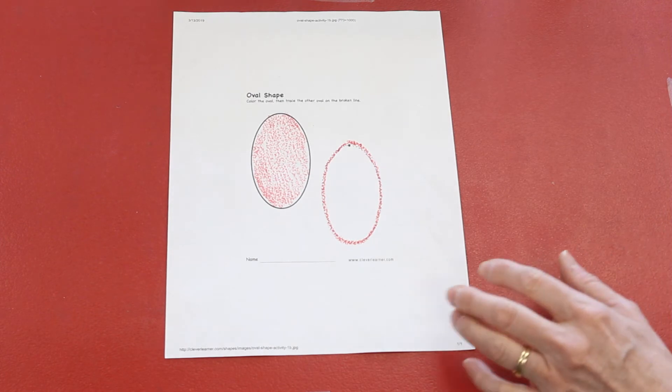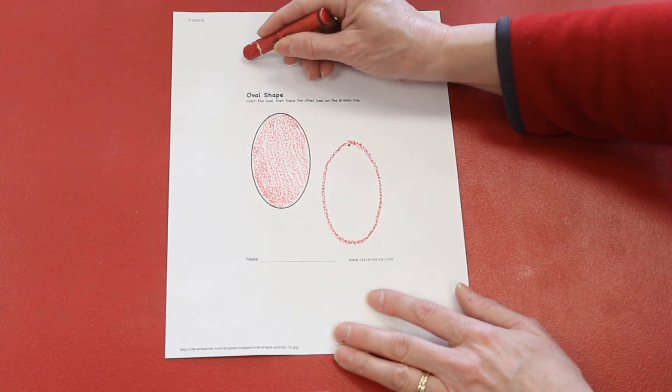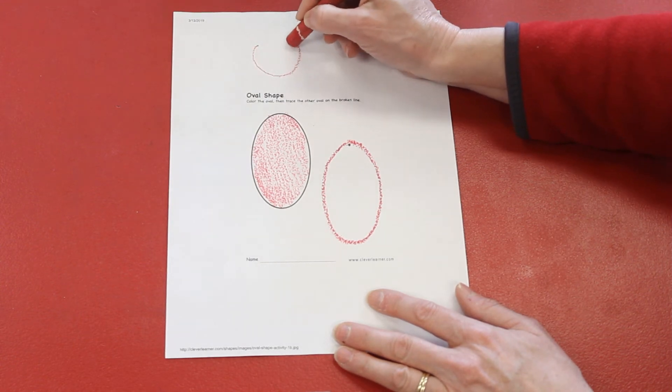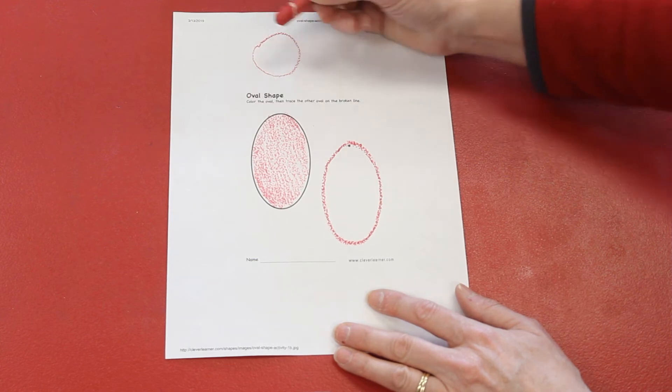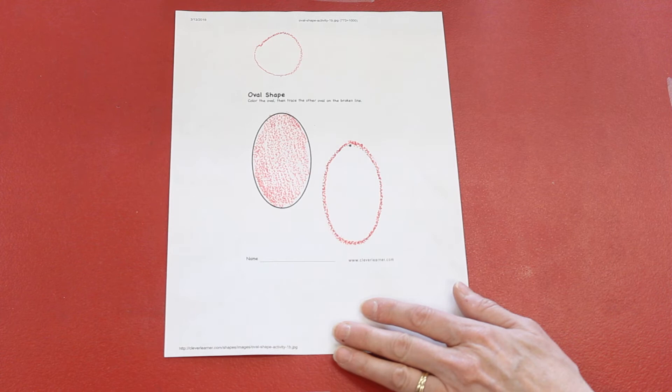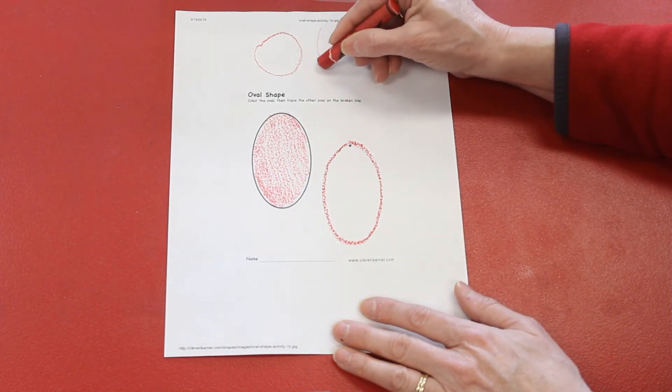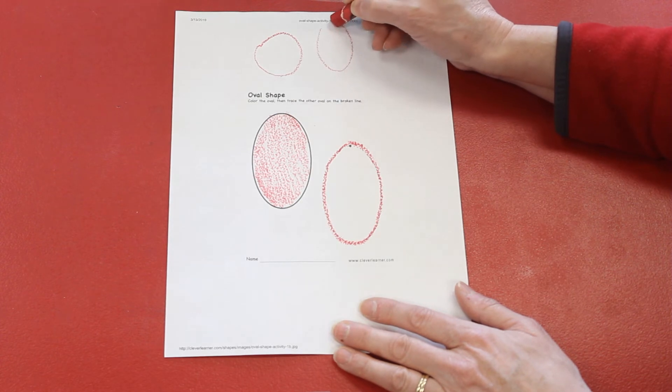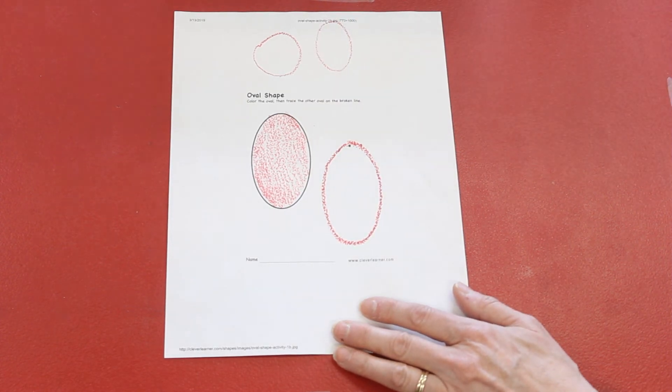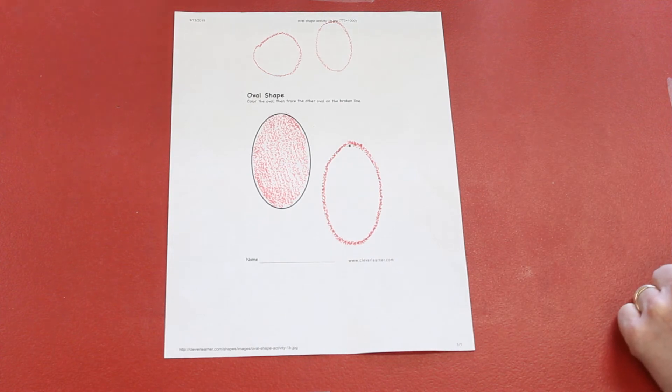Yes, a circle. Can you draw a circle on your paper? A circle goes round and round. How is an oval and a circle different? Yes, an oval is taller than a circle, isn't it? Good job.